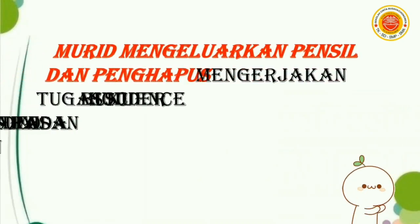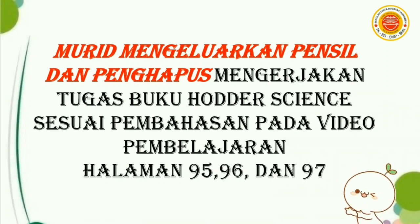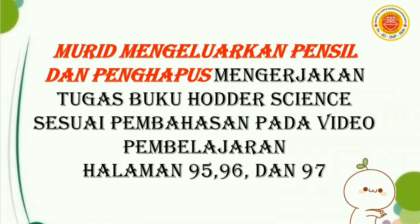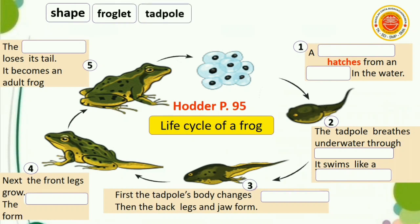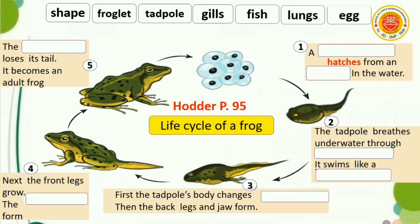Kita ganti buku Hodder Science. Murid mengeluarkan pensil dan penghapus, mengerjakan tugas buku Hodder Science sesuai pembahasan pada video pembelajaran halaman 95, 96, dan 97. Pada halaman 95, diminta lengkapilah label untuk siklus kehidupan katak. Pilihlah dari kata-kata ini: bentuk, anak katak, berudu atau kecebong, insang, ikan, paru-paru, dan telur. Untuk soal nomor satu, titik-titik menetas dari titik-titik di dalam air. Jawabannya: berudu atau kecebong menetas dari telur di dalam air.